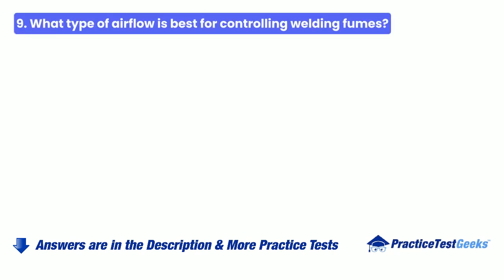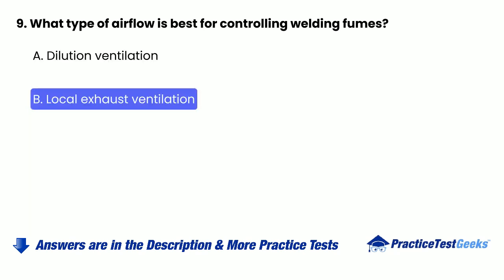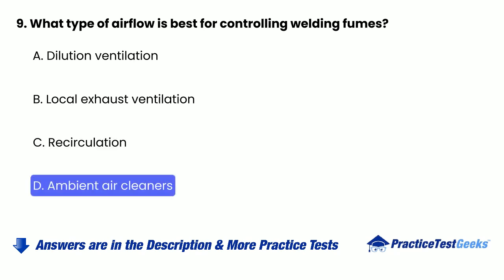Question 9: What type of airflow is best for controlling welding fumes? A. Dilution ventilation. B. Local exhaust ventilation. C. Recirculation. D. Ambient air cleaners.